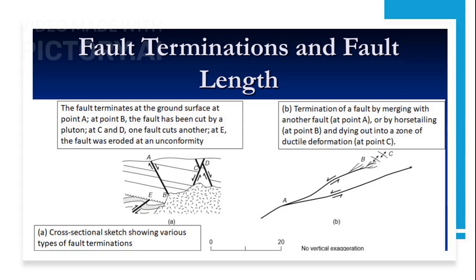Cross-sectional sketches provide insight into different types of fault terminations — from ground surface terminations to interactions with other faults or zones of ductile deformation. These visualizations help us understand the complex nature of fault dynamics and their geological implications.